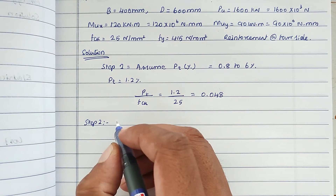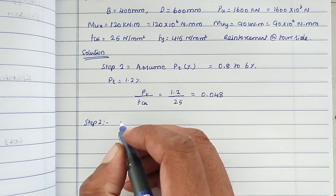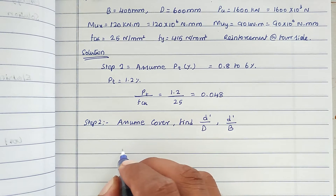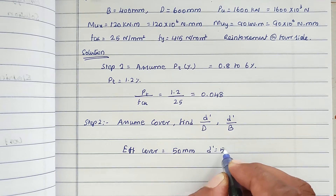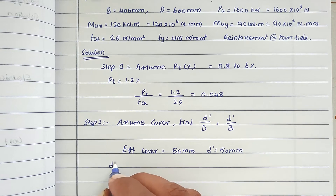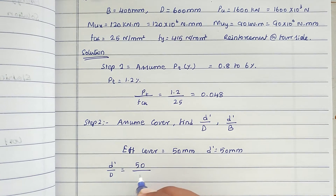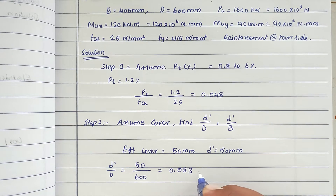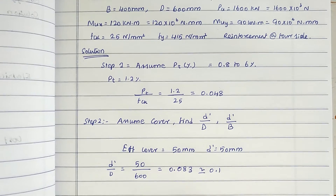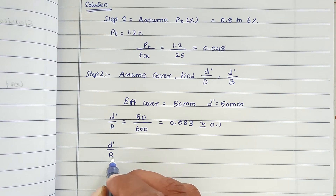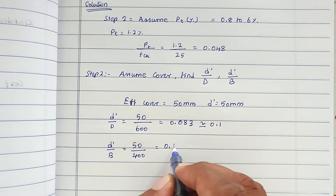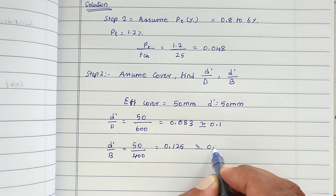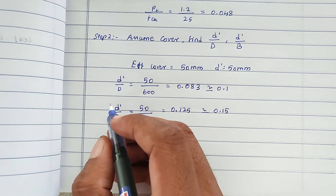Step 2: Assume effective cover and find D'/D and D'/B ratios. Assume effective cover D' = 50 mm. Then D'/D = 50/600 = 0.083, take as 0.1. And D'/B = 50/400 = 0.125, take as 0.15.